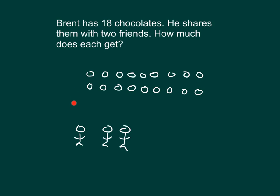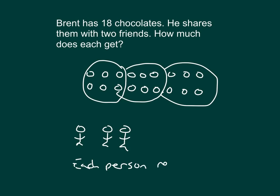And they're each receiving these chocolates. So one for Brent, one for a friend, one for the other friend. Let's group those. So that would be 18 into three different groups. There's one group, two groups of the same amount, and the third group of that same amount. So each person receives six chocolates.